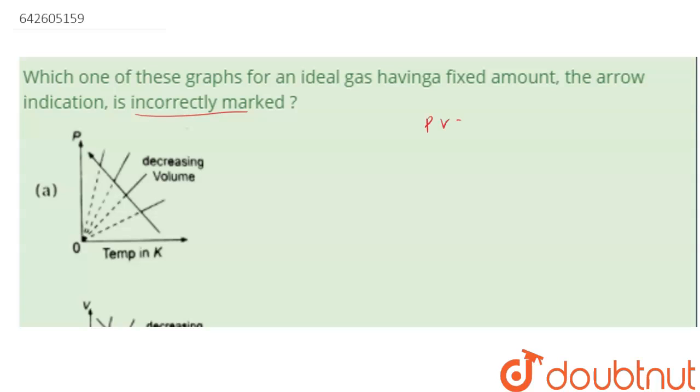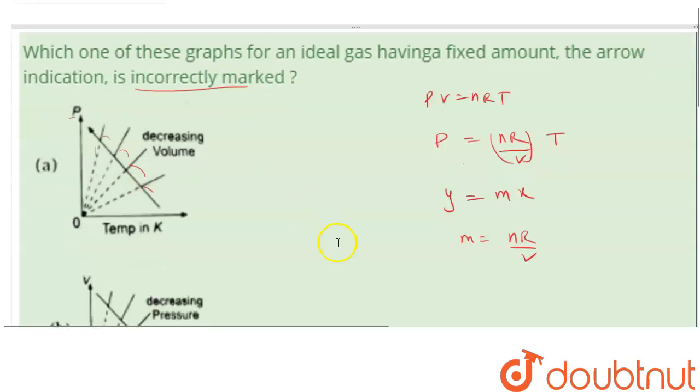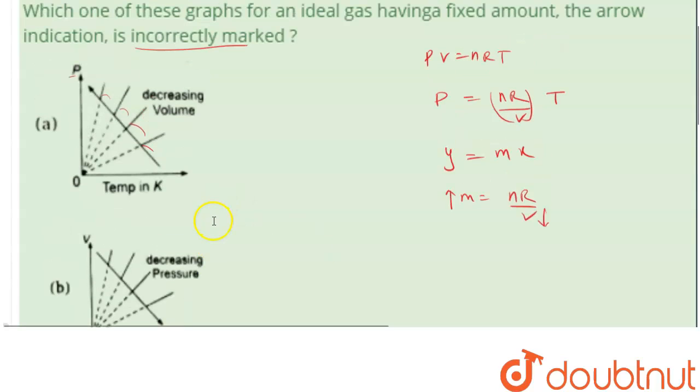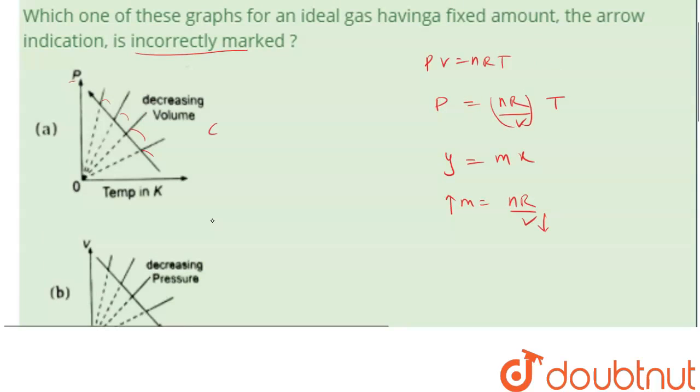So PV is equals to nRT. First graph is between pressure and temperature, so this is nR/V. This is y equals mx plus c, so slope m is nR by V. If you are increasing the slope, the slope is increasing, so clearly your slope will increase when you decrease the volume. So this is correct, volume is decreasing, so this is correct. We have to find only incorrect.